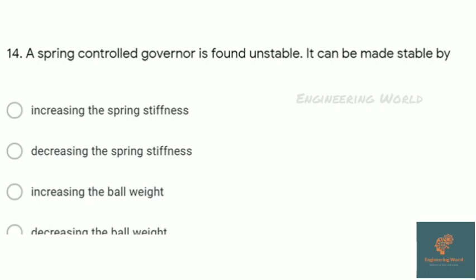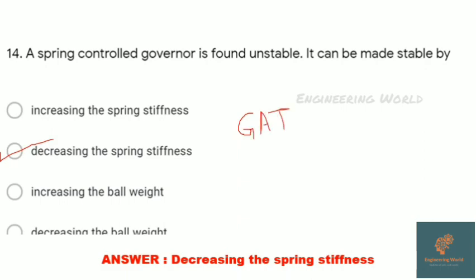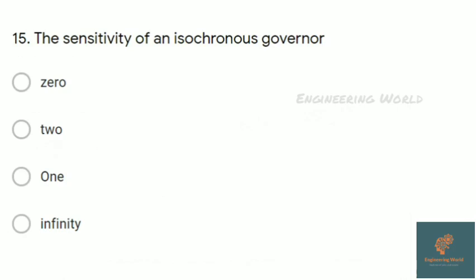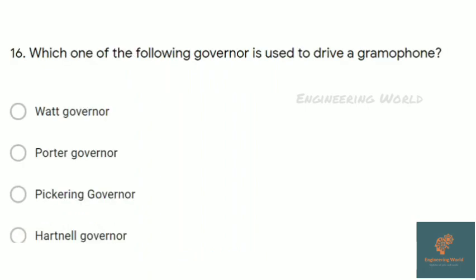A spring controlled governor is found unstable. It can be made stable by decreasing the spring stiffness. We will see all these concepts in our free GATE IES 2021 lecture series on the same YouTube channel. We will clear all the concepts. There are also free mock tests, so please subscribe the channel.